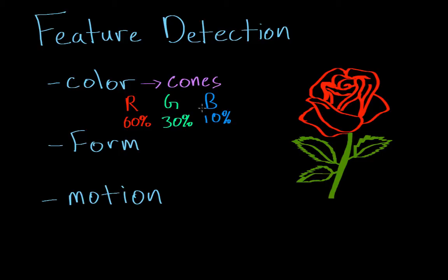We divide them into red, green, and blue cones because red cones are extremely sensitive to red light. So if we're looking at this rose, the petals are actually reflecting red light. This red light enters your eye, and if it hits a red cone, the cone will activate and fire an action potential. This action potential reaches your brain, and your brain recognizes that you're looking at something red. This has come to be known as the trichromatic theory of color vision.